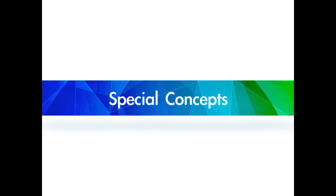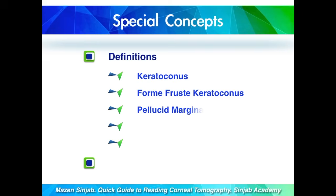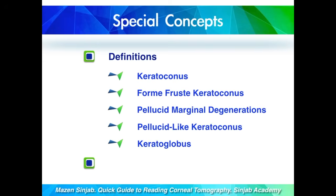Part 6: Special concepts. In this part, I am going to define keratoconus, forme fruste keratoconus, pellucid marginal degeneration, pellucid-like keratoconus, and keratoglobus. I will also talk about progression criteria in terms of corneal tomography.